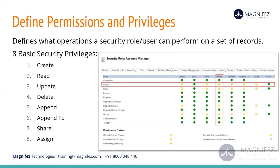These are the eight privileges we have. On the right-hand side, you can see a security role which has several tabs. Under the sales tab, we have entity details as rows, and on the columns we have the different privileges like create, read, update, etc. There are bubbles shown for each entity, and each bubble indicates what operation or permission this particular security role has on that particular entity — for example, you can see invoice and delete indicated.